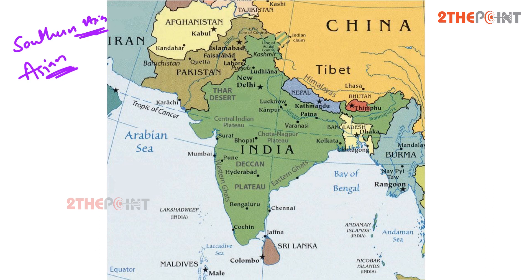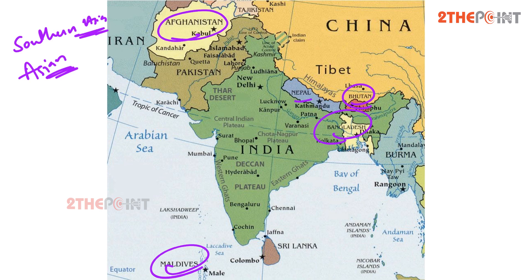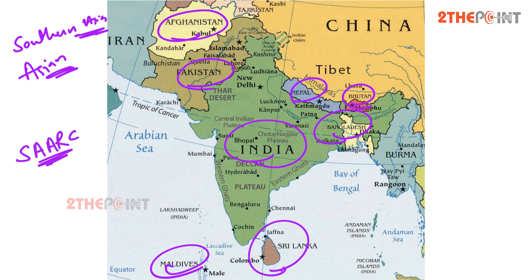South Asia is bounded on the south by the Indian Ocean and on land by Western Asia, Central Asia, East Asia, and Southeast Asia. The current territories of South Asia are Afghanistan, Bangladesh, Bhutan, Maldives, Nepal, India, Pakistan, and Sri Lanka. The South Asian Association for Regional Cooperation, in short called SAARC, is an economic cooperation organization in this region which was established in the year 1985.